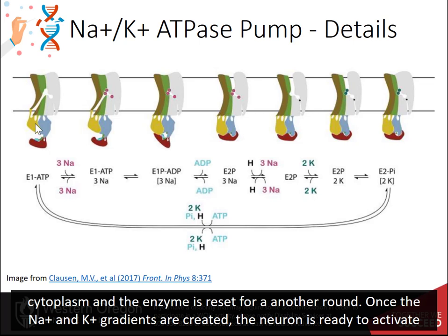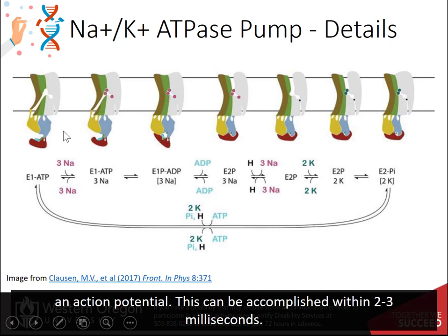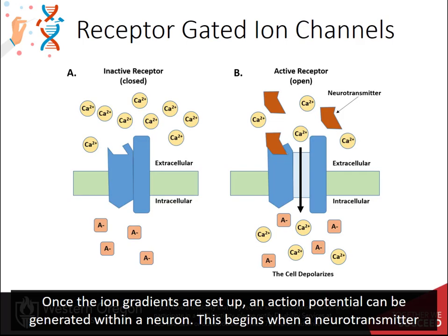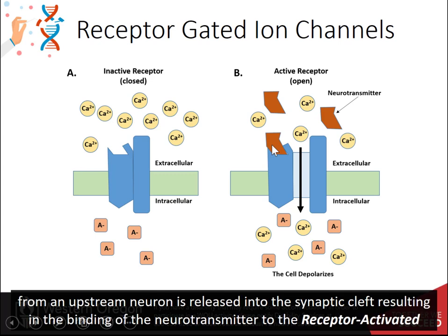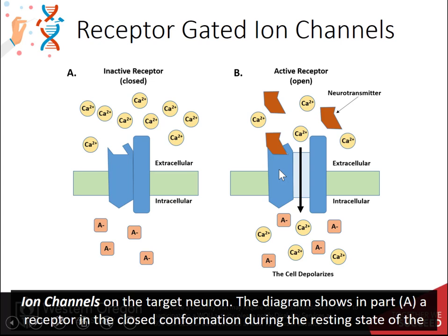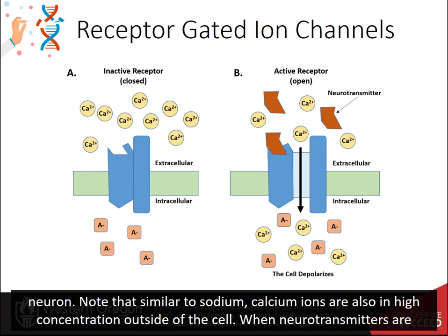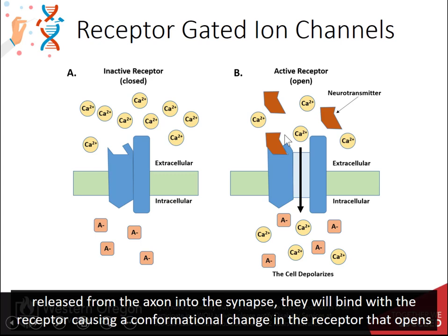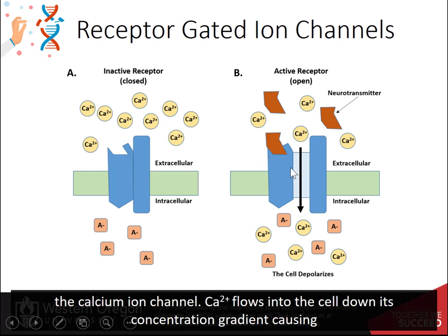Once the sodium and potassium gradients are created, the neuron is ready to activate an action potential. This can be accomplished within two to three milliseconds. An action potential begins when a neurotransmitter from an upstream neuron is released into the synaptic cleft, resulting in the binding of the neurotransmitter to the receptor-activated ion channel on the target neuron. The diagram shows in Part A a receptor in its closed conformation during the resting state. Note that similar to sodium, calcium ions are also in high concentration outside of the cell. When neurotransmitters bind the receptor, a conformational change opens the calcium ion channel, and calcium flows into the cell down its concentration gradient, causing localized depolarization.